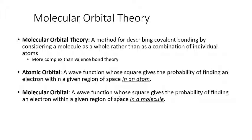The idea of molecular orbital theory extends the concept of atomic orbitals, where atomic orbitals are a wave function whose square gives the probability of finding an electron within a given region of space within an atom. The molecular orbital theory extends that idea to a molecule as a whole, where a molecular orbital is a wave function whose square gives the probability of finding an electron within a given region of space in a molecule. It is the extension of the quantum mechanical model to molecules.